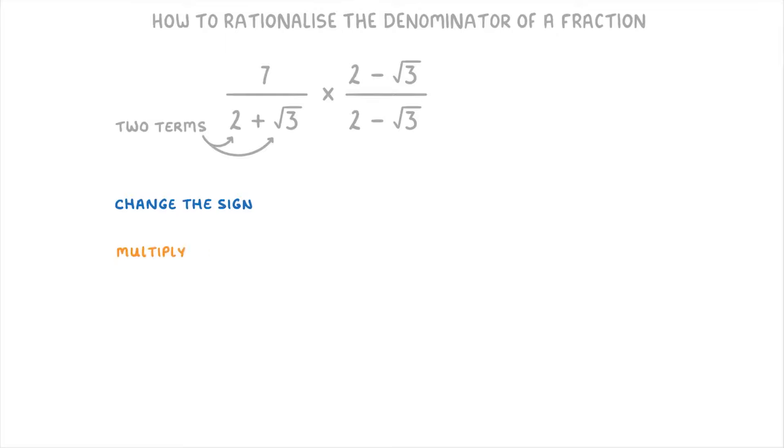Next we need to multiply it all out. So for the top, 7 times 2 is 14, and 7 times minus root 3 is minus 7 root 3.